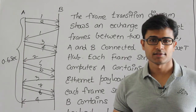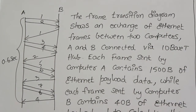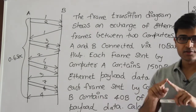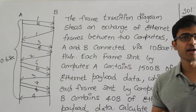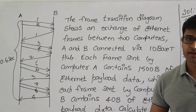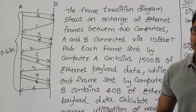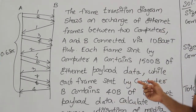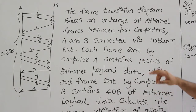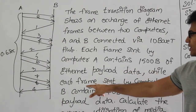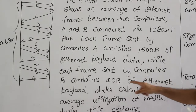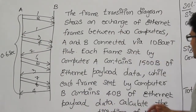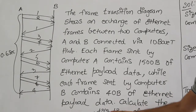The total time taken is 0.6 seconds. Each frame sent by computer A contains 1500 bytes of Ethernet payload data, which is the maximum in standard Ethernet. Note that in GATE exam questions, these sizes may differ, so solve accordingly. Each frame sent by computer B contains 40 bytes of Ethernet payload data.